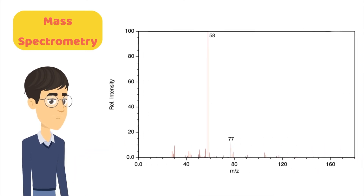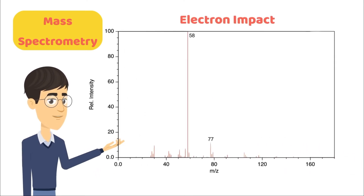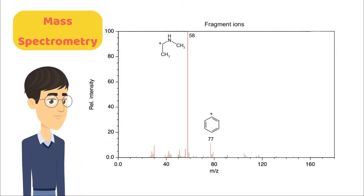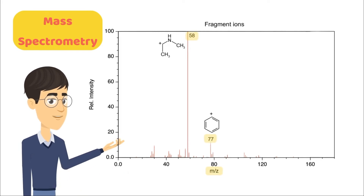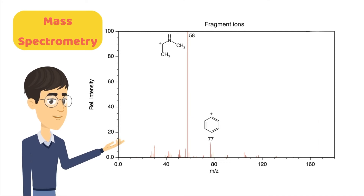Using a hard ionization technique such as electron impact, we can increase the fragmentation and estimate the structure of the smaller fragments based on their mass-per-charge ratio. Due to extensive fragmentation in this technique, often we are not able to observe the molecular ion.